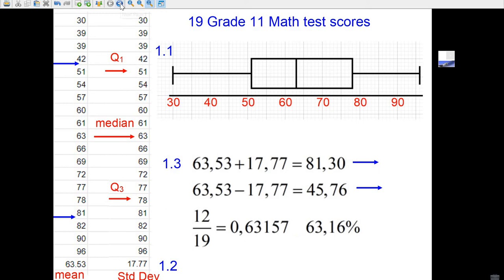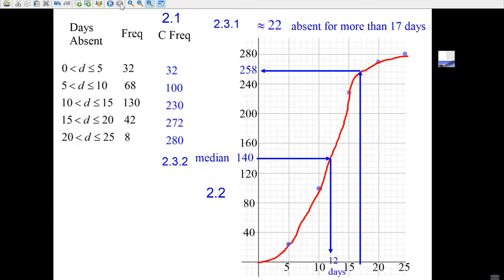The next question is very standard. It says the cumulative frequency. So all you do is go 32 plus 68 is 100, 100 plus 130 is 230, 230 plus 42 is 272, and everything added up, add 8 more, you get 280. There's the easiest two marks in the exam.